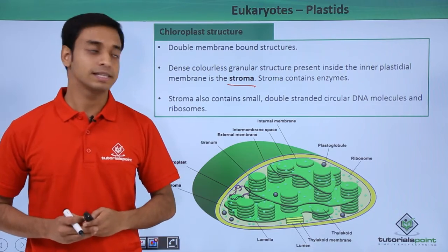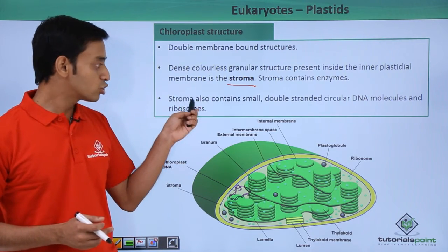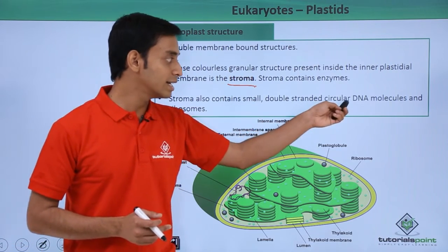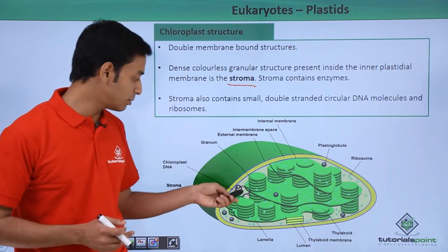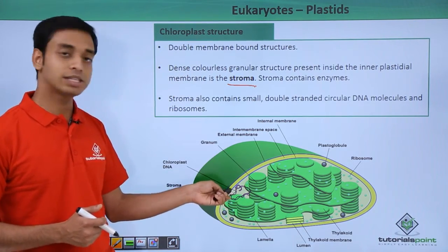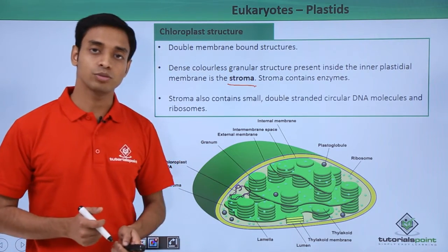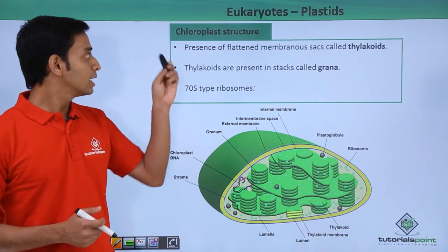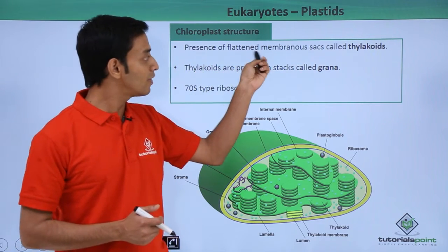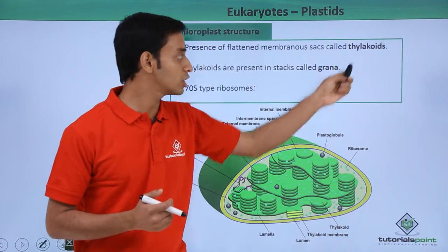The stroma also contains small double-stranded circular DNA molecules, as you can see here — this is the chloroplast DNA. The chloroplast also has ribosomes inside itself.